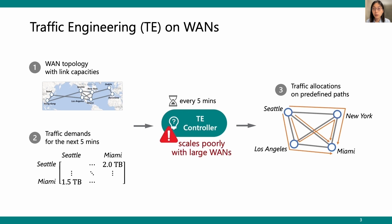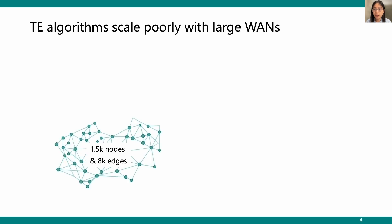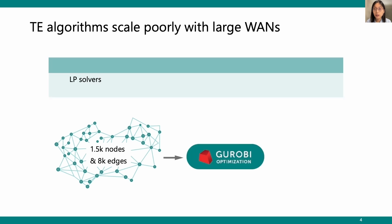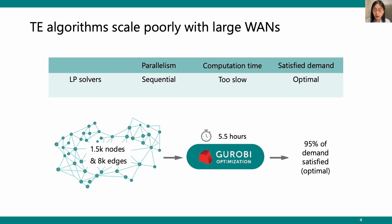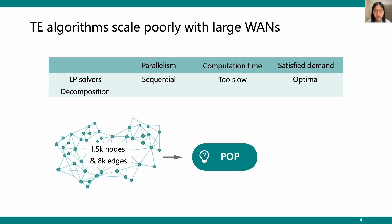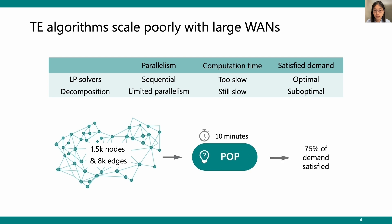However, the TE controller scales poorly as the Wide Area Network grows larger. For example, with a network of 1.5K nodes and 8K edges, LP solvers such as Gurobi are widely used, but due to the sequential nature of the LP solver, it takes 5.5 hours to output the optimal solution with 95% of demand satisfied. Recent approaches such as POP from SOSP'21 decompose the TE problem into sub-problems and concurrently solve them, but this limited parallelism still results in 10-minute computation time and only 75% of demand satisfied due to decomposition sub-optimality.